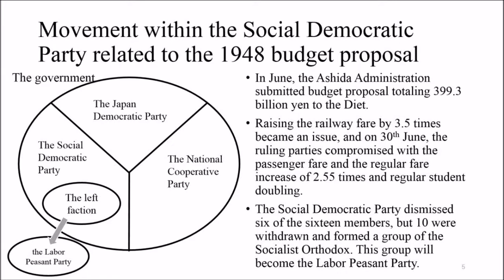The Social Democratic Party was split on this compromise draft. The realistic faction of the left agreed to budget formation, but the hardline faction opposed it. Eleven members voted against in the House of Representatives on 3rd July and five in the House of Councilors on 4th July. The Social Democratic Party dismissed 6 of the 16 members, but 10 withdrew and formed the Socialist Orthodox group, which later became the Labor Peasant Party.